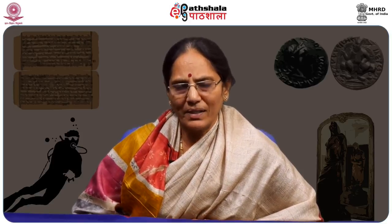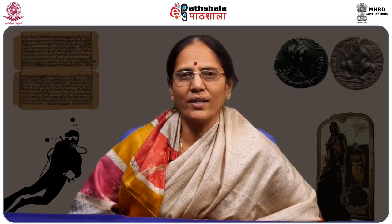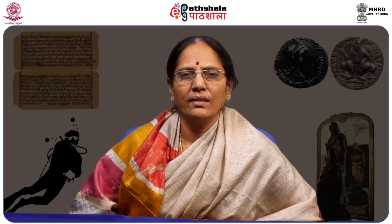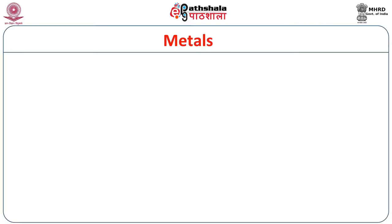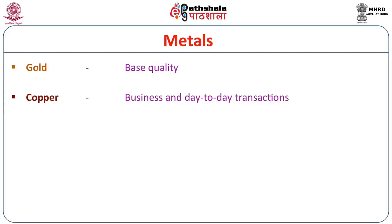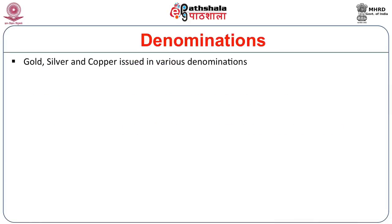We will now discuss the metals used by the Vijayanagara rulers, the denominations of these coins, and the symbols portrayed on them. They issued gold, silver, and copper coins. Gold coins are of base quality, whereas copper coins were used for business and day-to-day transactions. Silver coins are very rare, issued only in the early period of Vijayanagara rule; later we find only gold and copper coins.